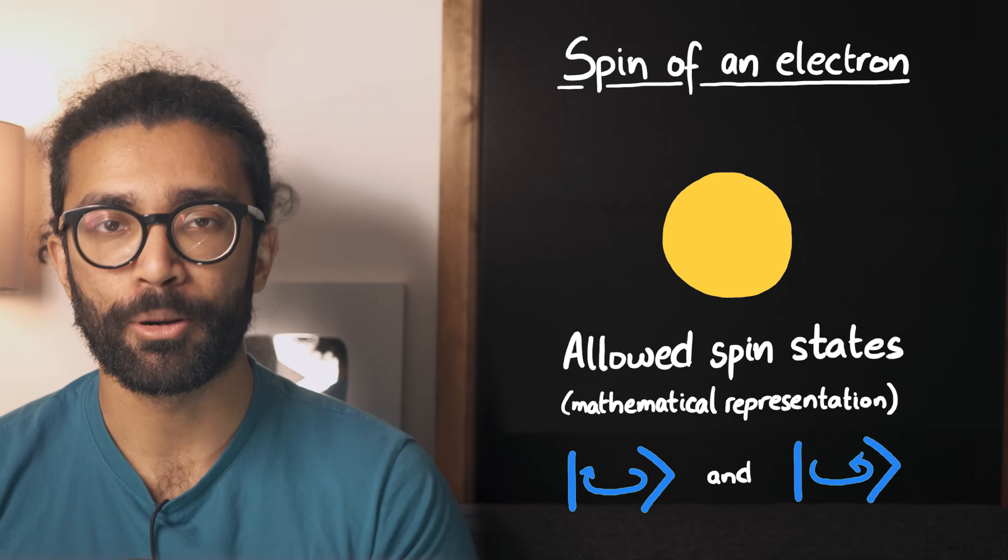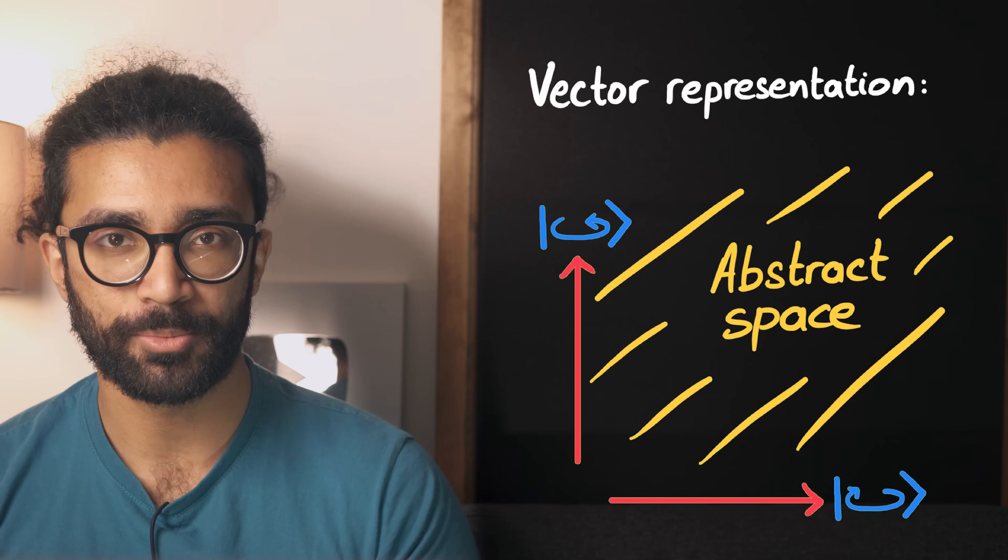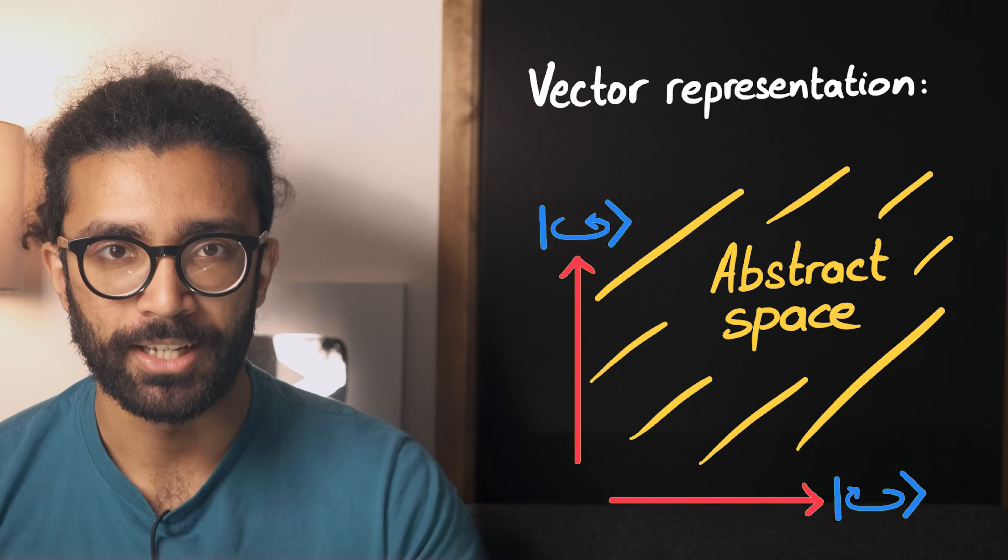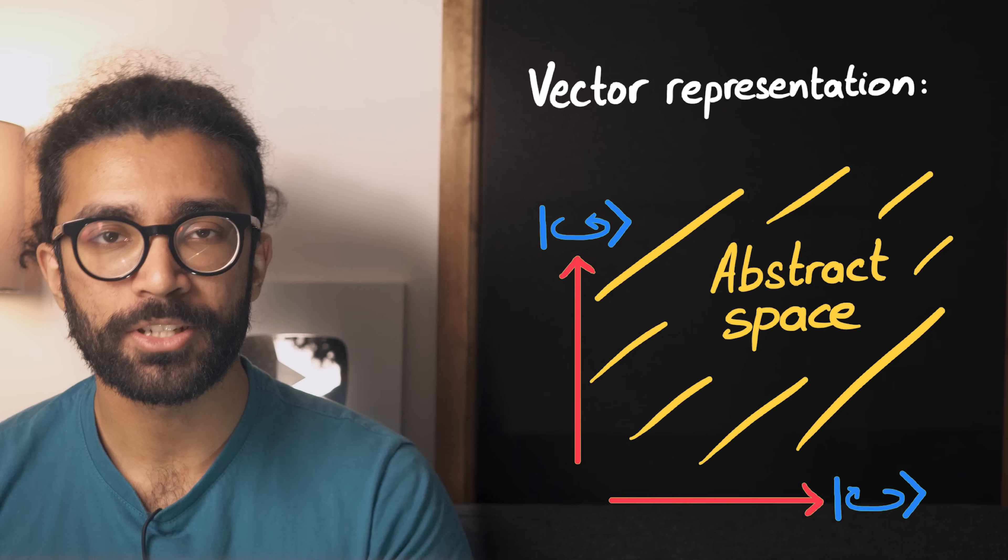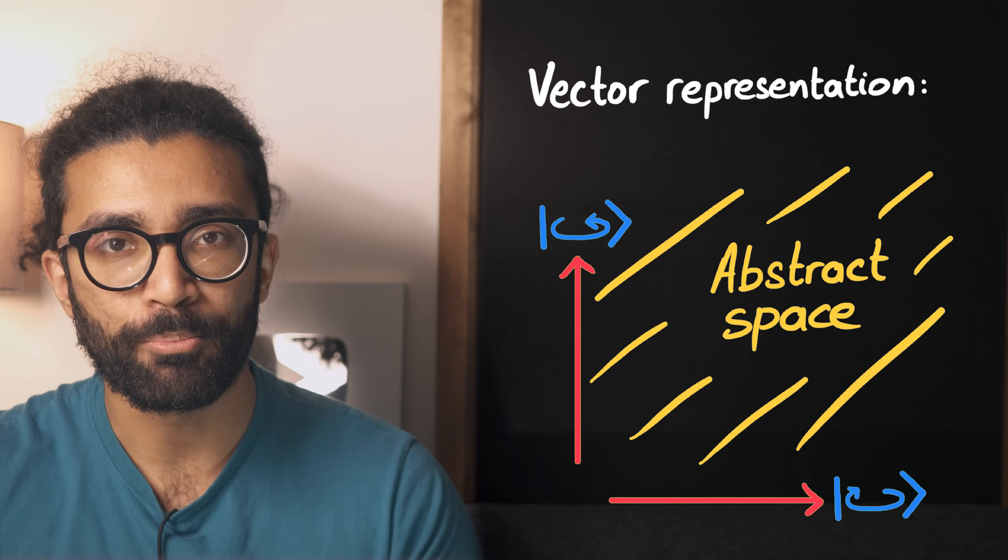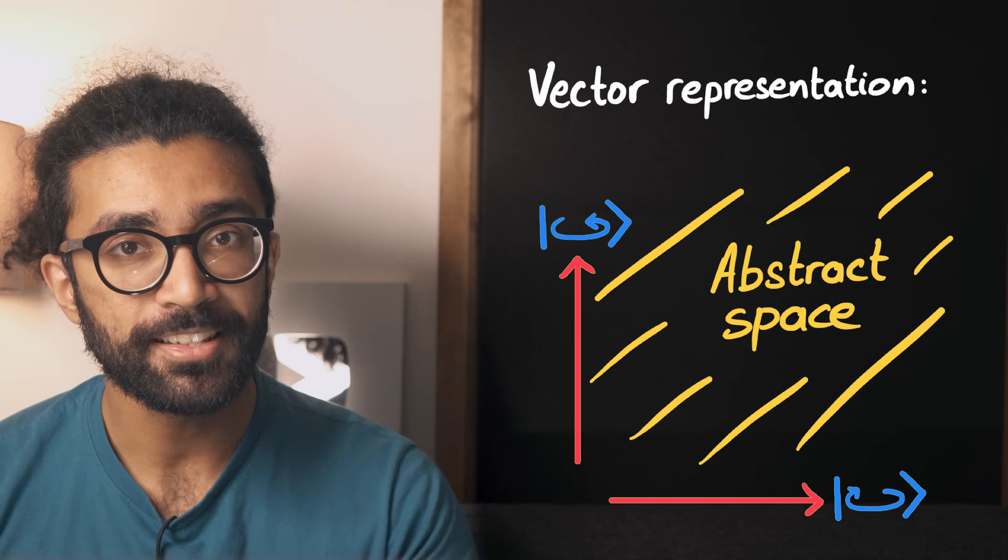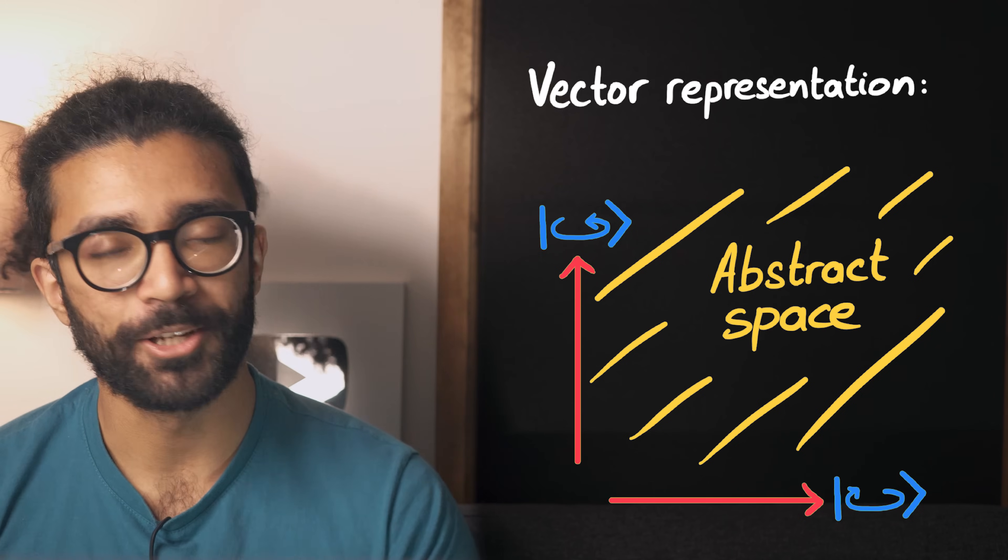And these two spins can be represented as vectors in some abstract mathematical space. This is a really strange idea, but basically any quantum state that we can find our particle in behaves like a vector and interacts with other possible states, just like vectors interact with each other. I've discussed this idea in much more detail in this video up here.